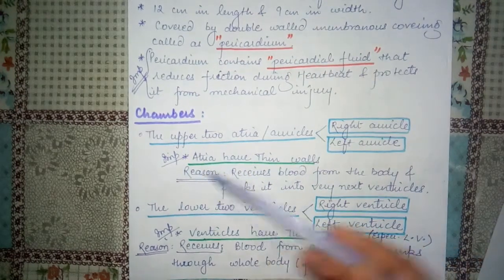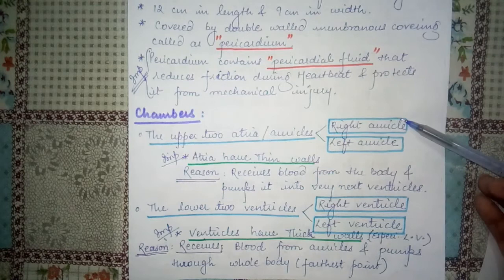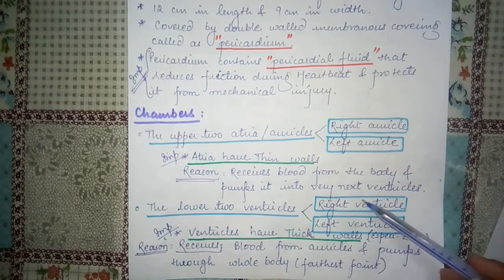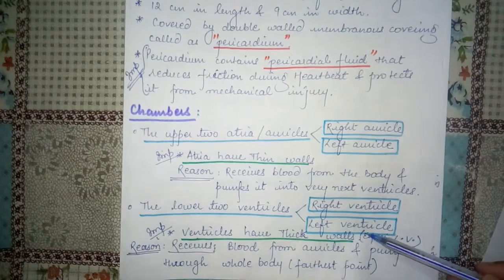As we all know, Atrias are divided into two main regions - right oracle and left oracle - and Ventricles are divided into two main regions - right ventricle and left ventricle.